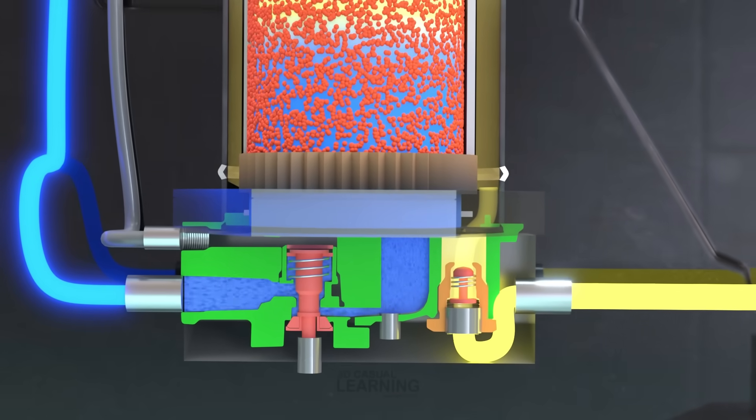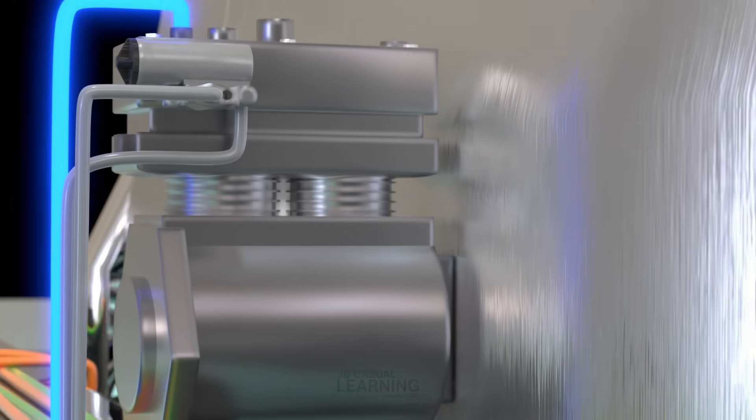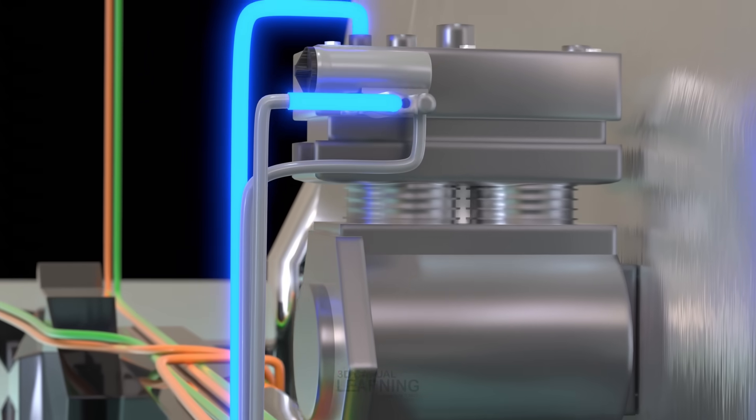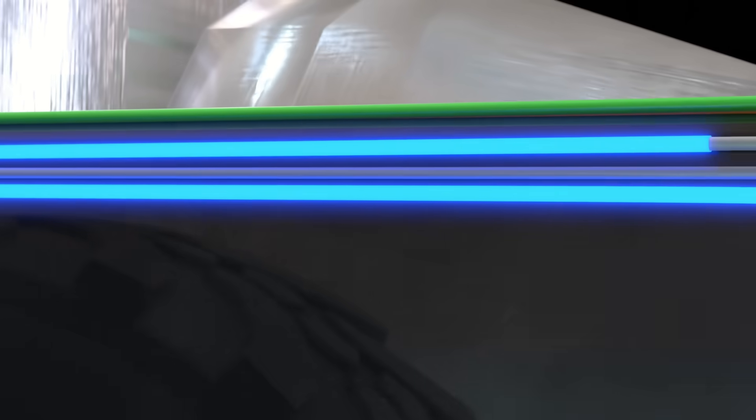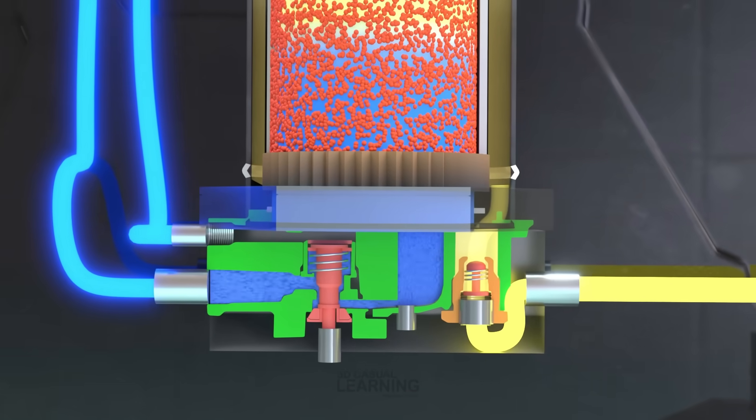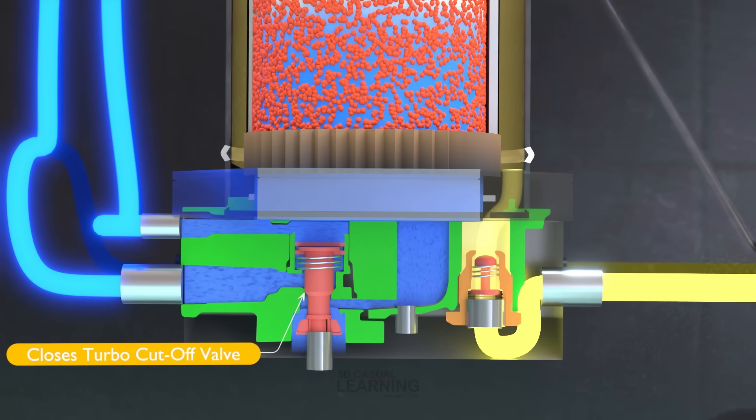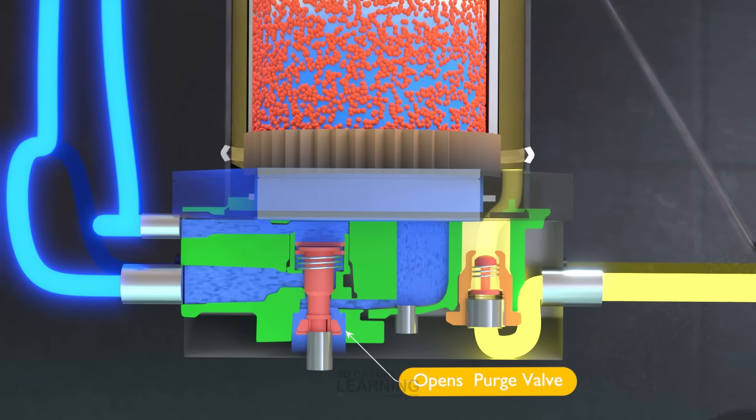When system pressure hits 120 PSI, the governor sends a signal to both the compressor and the air dryer. This signal causes the compressor to unload and triggers the purge cycle in the air dryer. Air from the governor enters the control port, moving the purge valve piston. This action does two things, closes the turbo cutoff valve, sealing the dryer's inlet port to prevent turbo pressure loss, important if the compressor is turbo-fed, and opens the purge valve, releasing contaminants collected in the end cover sump through the exhaust port.